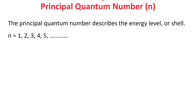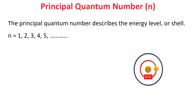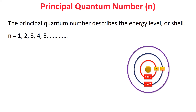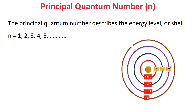The first quantum number is the principal quantum number, denoted by n. This number describes the energy level, or shell, that an electron occupies. The value of n is always a positive integer — one, two, three, and so on. The larger n is, the further the electron is from the nucleus, and the higher its energy. For n=1 it's the K-shell, n=2 the L-shell, n=3 the M-shell, and n=4 the N-shell. As n increases, electrons are farther from the nucleus and have higher energy.